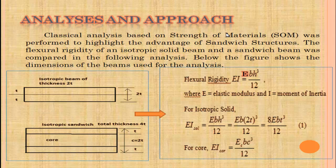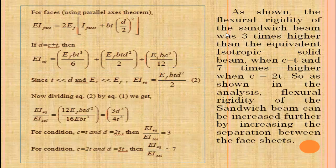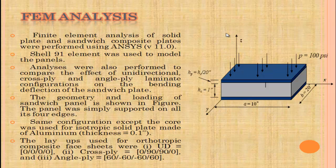Classical analysis based on strength of materials was performed to highlight the advantage of sandwich structures. The flexural rigidity of an isotropic solid beam and a sandwich beam were compared. The flexural rigidity of the sandwich beam was three times higher than the equivalent isotropic solid beam when c equals t, and seven times higher when c equals 2t. As shown in the analysis, flexural rigidity of the sandwich beam can be increased further by increasing the separation between the face sheets.